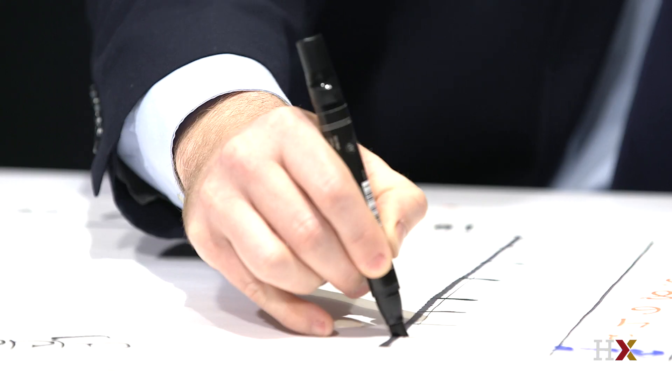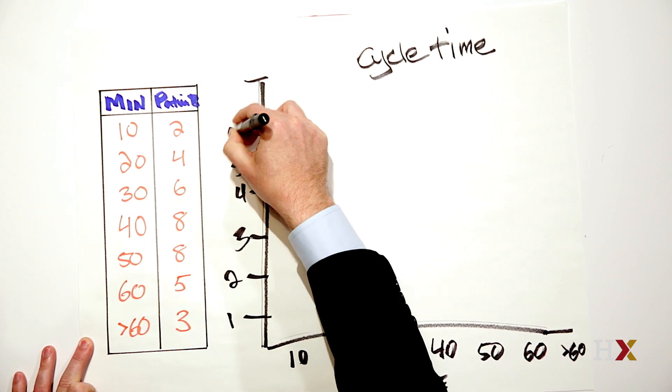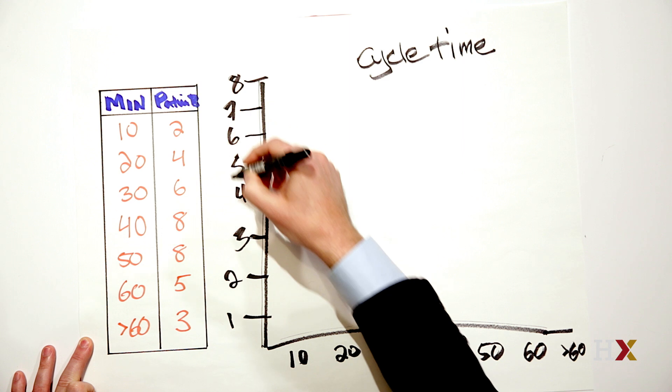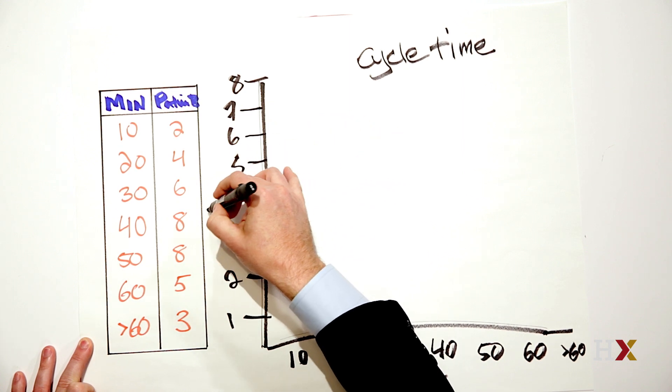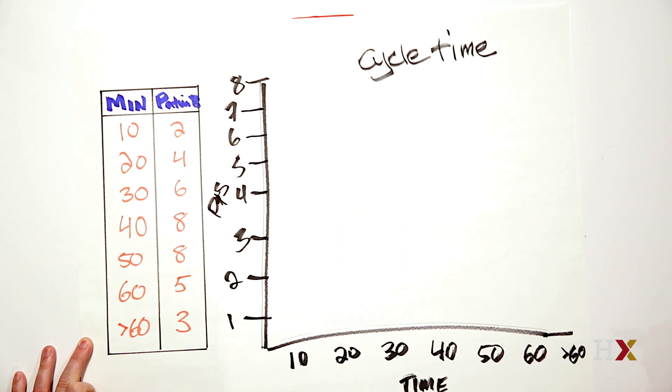So I'll go 1, 2, 3, 4, 5, 6, 7, 8. This is the y-axis and I want to label that as well so people who can see this know what it is that we're tracking.